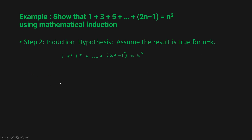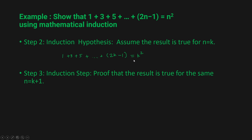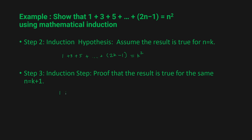The next step is step 3, the induction step. Here you have to prove that the result is true for n = k + 1. We write 1 + 3 + 5 + ... + (2k - 1) — that's up to k — and then add one more term for k + 1, which is (2k + 1) - 1, and set it equal to (k + 1)².